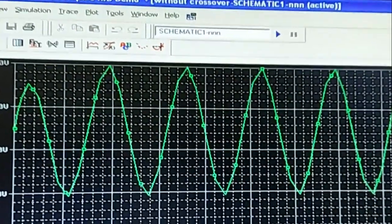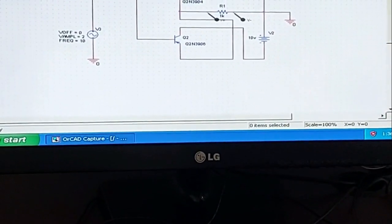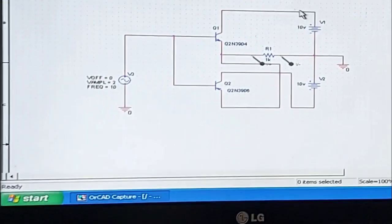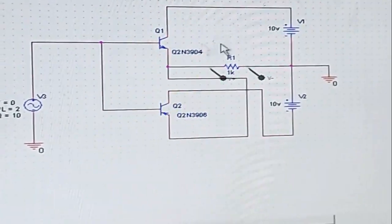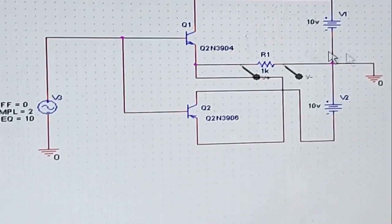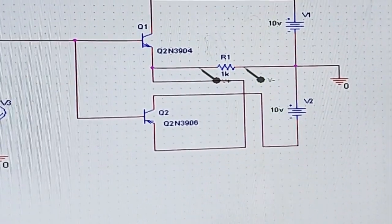Now here is the circuit diagram for a Class B push-pull amplifier with crossover distortion. Make the connections of the AC source, connect the transistors as usual.